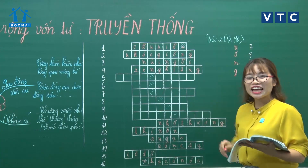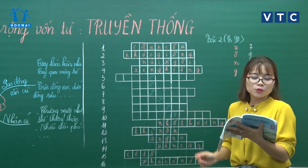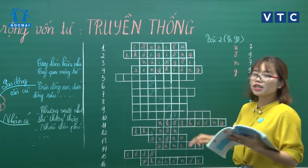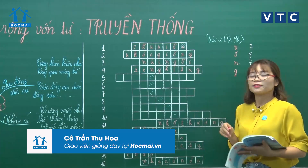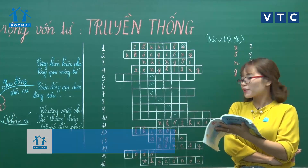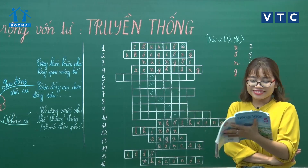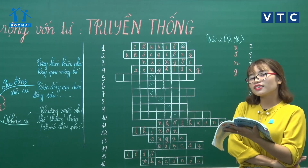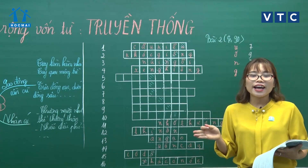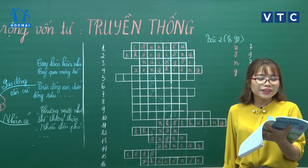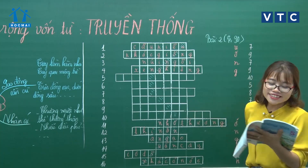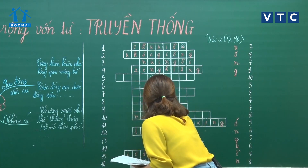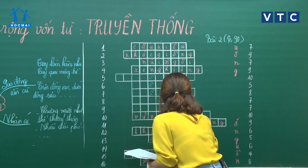Lưu ý: có câu 'Dù ai nói ngả nói nghiêng, lòng ta vẫn vững như kiềng ba chân', còn ở đây là 'Dù ai nói đông nói tây, lòng ta vẫn vững như cây giữa rừng.' Vậy điền là 'vững như cây'. Câu số 9: 'Lên non mới biết non cao, lội sông mới biết lạch nào cạn sâu' - tìm được chữ hát.